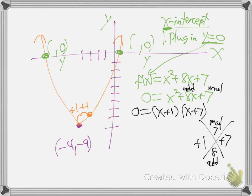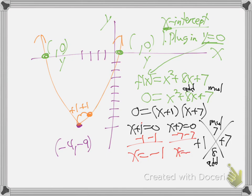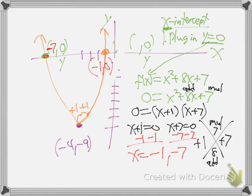Remember how to solve those kind of things? It's going to be the first one equals zero or the second one equals zero, because two things times to equal zero - either one could be zero to make that happen. And then it's just going to be opposite sign. So subtract one from both sides: negative one. Subtract seven from both sides: negative seven. So those two x values are at negative one and negative seven.